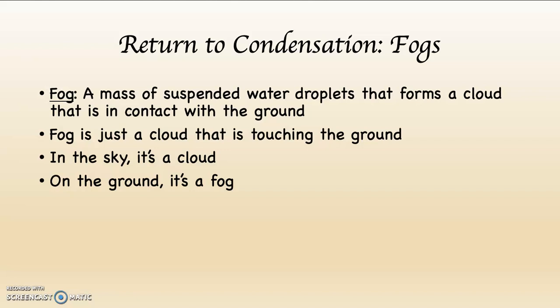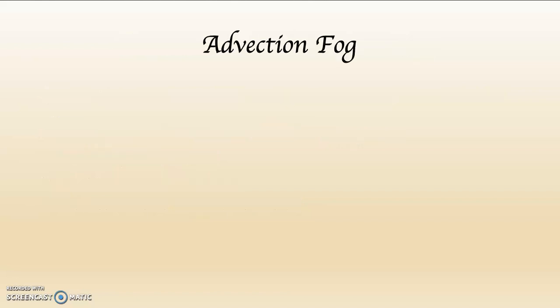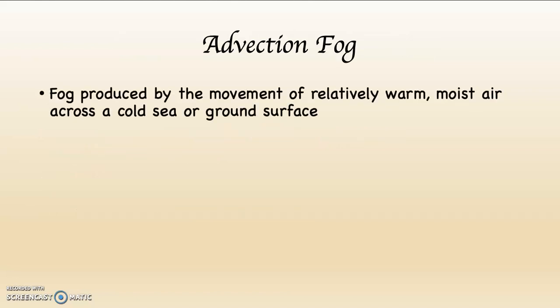If you were somehow able to go up into the sky where there are clouds and hang around up there without a machine, it would feel very much like being in a fog, because they are the same thing. In California, we have four versions of fogs. The first one is called advection fog. Advection fog is fog produced by the movement of relatively warm, moist air across a cold sea or land surface.